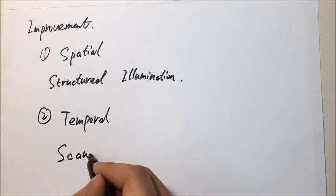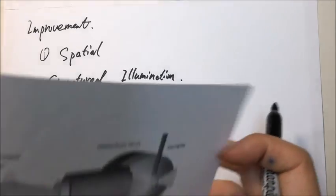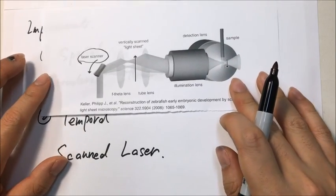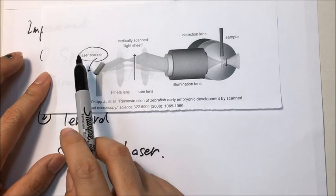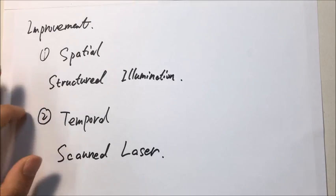For the temporal resolution, there is scanner laser light sheet microscopy. The idea behind it is to generate a plane of light with a laser scanner that rapidly moves light vertically and horizontally through the specimen.